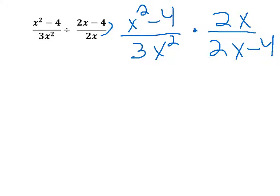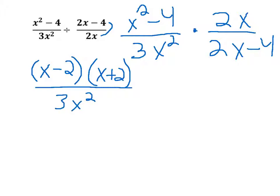Then we can factor. x squared minus 4 we can factor into x minus 2, x plus 2 over 3x squared times 2x. And 2x minus 4, we can factor out a 2, x minus 2.